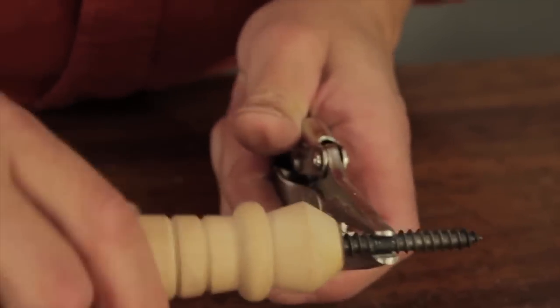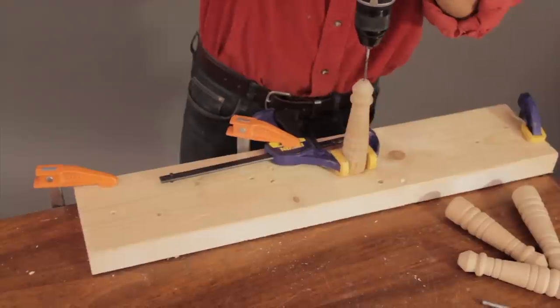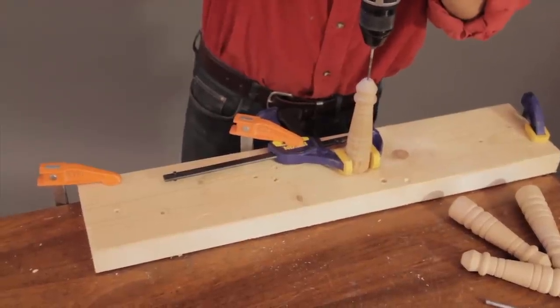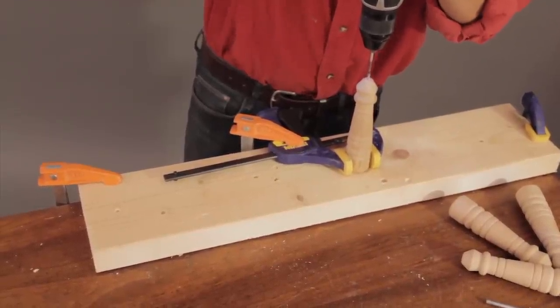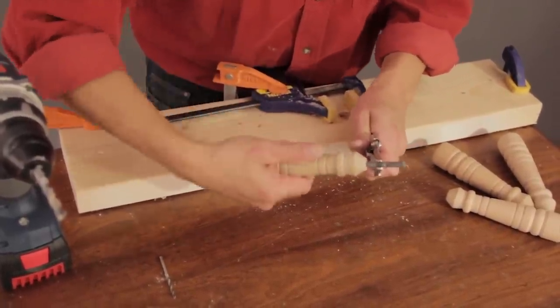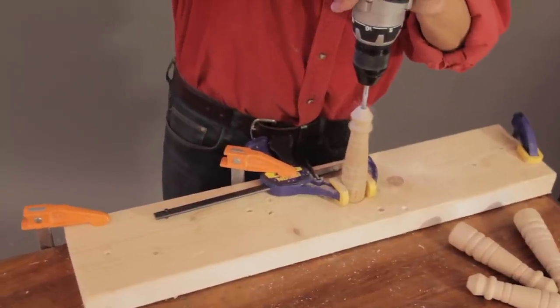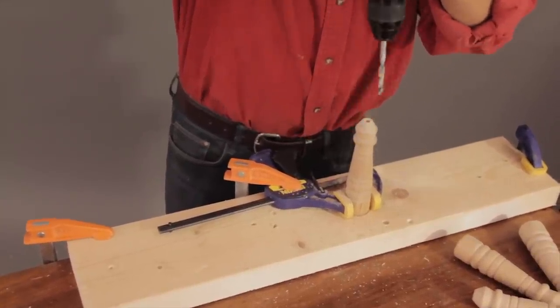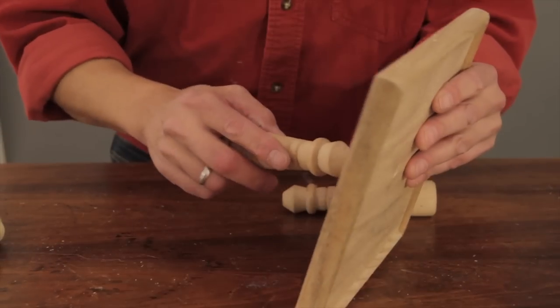Thread a dowel screw into the spots where you removed the bolt. To prepare the posts, use the drill driver to bore an eighth inch pilot hole into the bottom one. Then drill a one quarter inch hole into the top. Stop at a depth of about three quarters of an inch on each, and repeat on the middle post.